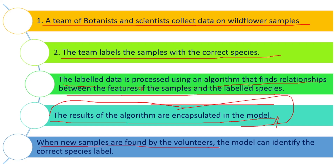When new samples are found by volunteers, the model can identify the correct species label. When a volunteer finds a new flower or a new sample and uploads photos of that sample, the app will try to find the relationship between the features the volunteer has provided, and then display the correct species label. This is how machine learning works.